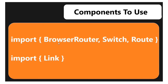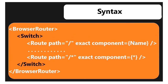For the syntax: the Route component uses a path attribute and a component attribute. The path specifies the URL — like slash, slash about, slash dashboard, slash songs, slash videos — and the component attribute specifies which component to render for that particular URL path.